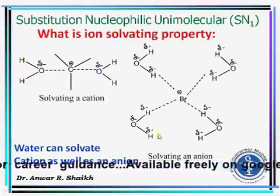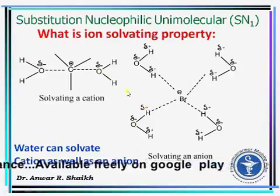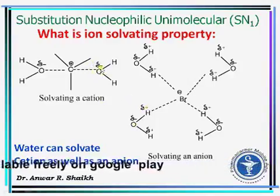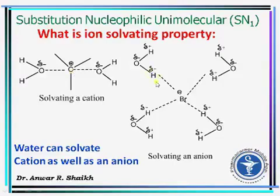What is an ion-solvating property? Consider water. Water possesses both ends: an electron-rich end, that is oxygen, and an electron-deficient end, that is hydrogen. By using its electron-rich end, water can solvate the carbocation, and by using its electron-deficient end, water can solvate the anion, that is the leaving group. Therefore, water can solvate cations as well as anions.